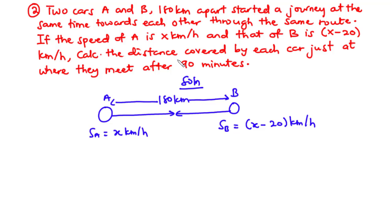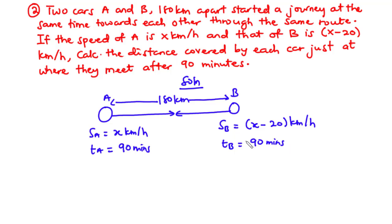We need to calculate the distance covered by each car just at where they meet after 90 minutes. This means the two cars met after 90 minutes — car A traveled 90 minutes and car B also traveled 90 minutes. Now let's convert this time to hours by dividing by 60, which gives us 1.5 hours.